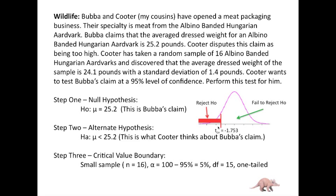We want to draw the picture. Alpha is 100 minus 95 percent, so we're going to look for a critical value with an alpha of 5 percent and 15 degrees of freedom, which gives us 1.753. We know it's negative because the rejection region follows the direction of the inequality in the alternate hypothesis — it's out on the left below the mean, so it's negative 1.753. Values below negative 1.753 are in the reject region; values above are in the fail-to-reject region.